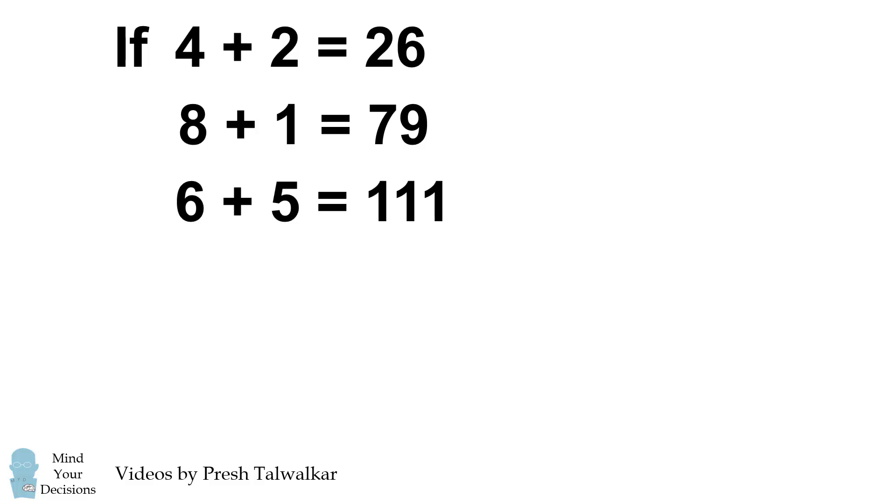Hey, this is Presh Tallwalker. If 4 and 2 combine to be 26, 8 and 1 combine to be 79, and 6 and 5 combine to be 111, then what do 7 and 3 combine to be?